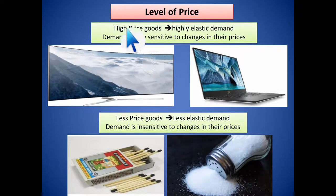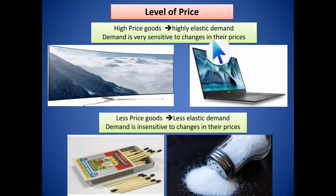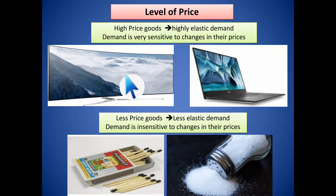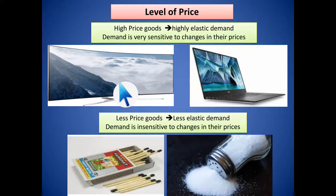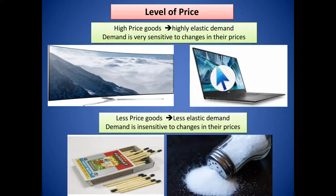The fourth factor is the level of price. High-priced goods are generally highly elastic because demand is very sensitive to price changes. For example, for a plasma TV we need to spend lakhs of rupees. If the price of a plasma TV declines, consumers will immediately go to purchase it — fearing the price might rise again in the near future. So a small change in price will affect consumer behavior in a larger extent, making high-priced goods highly elastic.